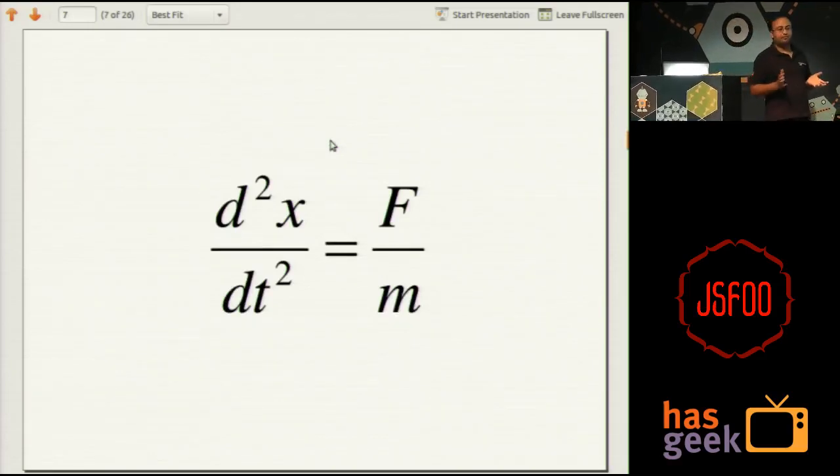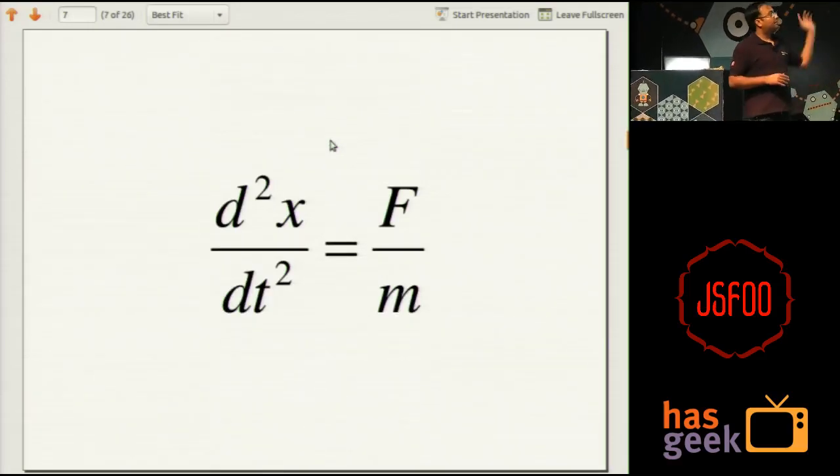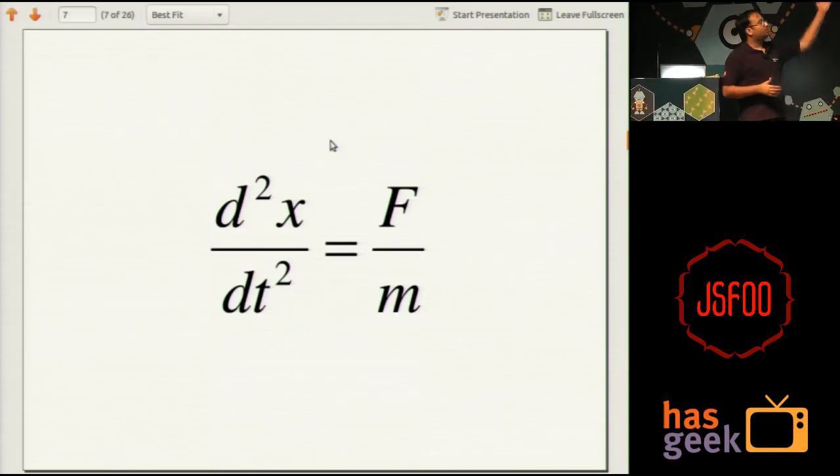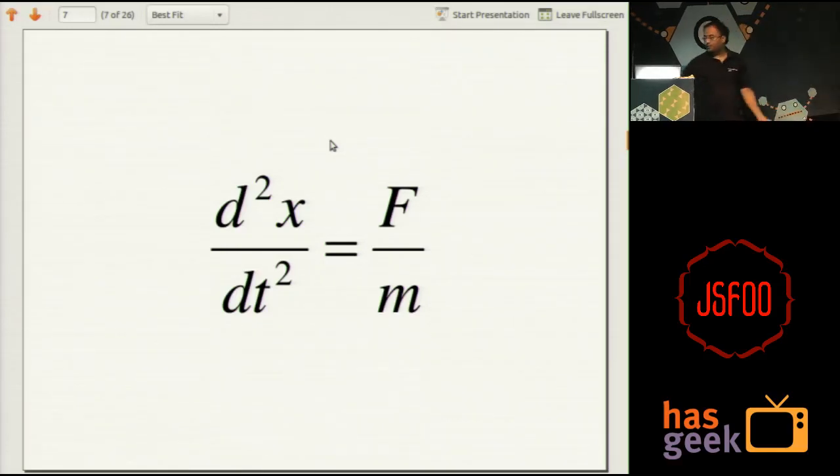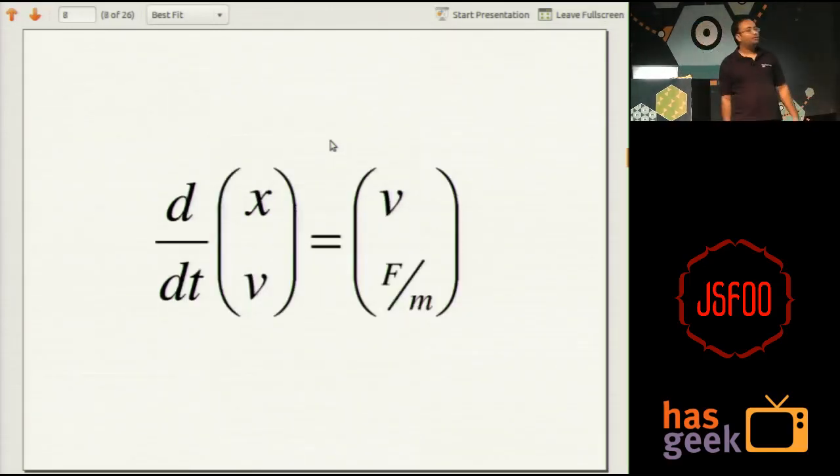So, again, that F equal to ma is the basic fundamental equation that we are going to solve. And it's actually a second order differential equation. So, you have x position and you differentiate it twice with respect to time, that is supposed to be equal to your force divided by mass. Now, the first tip that I can give you, don't solve, don't integrate twice during the same step, you don't need to.